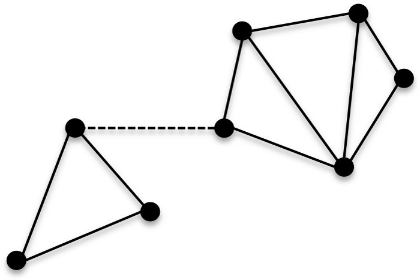A cut, vertex cut, or separating set of a connected graph G is a set of vertices whose removal renders G disconnected. The connectivity or vertex connectivity κ(G), where G is not a complete graph, is the size of a minimal vertex cut. A graph is called K-connected or K-vertex-connected if its vertex connectivity is K or greater.